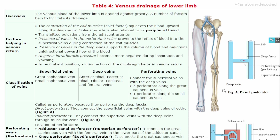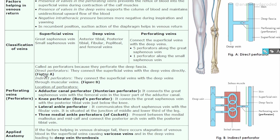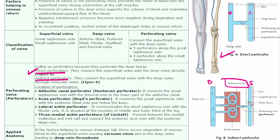There are two types of perforators: direct perforators and indirect perforators. Direct perforators connect the superficial vein to the deep vein directly. Indirect perforators go from the superficial vein into venous sinuses within the muscle and then to the deep vein, so they pass through muscle tissue before reaching the deep vein.